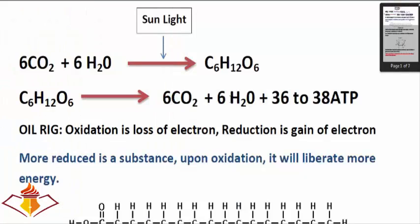Before I proceed to glycolysis, link reaction, and Krebs cycle, I just want to recap a few basic concepts. The ultimate source of energy for planet Earth is sunlight, and that sunlight is trapped by plants in the process called photosynthesis, where carbon dioxide is reduced to food — glucose.